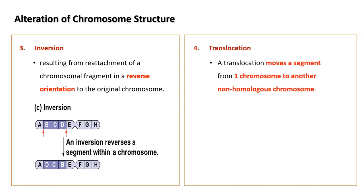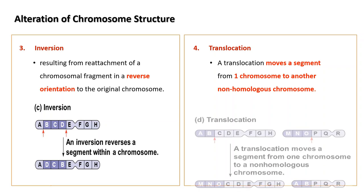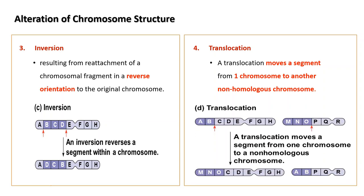The fourth type is translocation, which moves a segment from one chromosome to another non-homologous chromosome. Two non-homologous chromosomes exchange segments with one another. Inversion and translocation can alter the phenotype of an organism because a gene's expression can be influenced by its location among neighboring genes, which can have devastating effects.